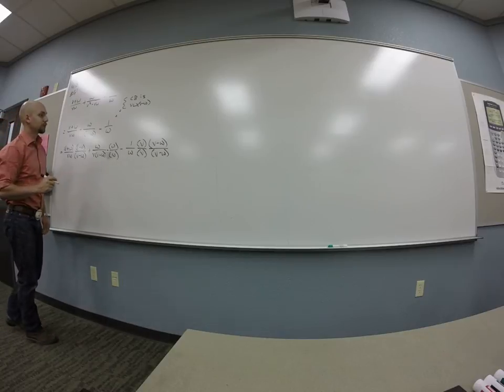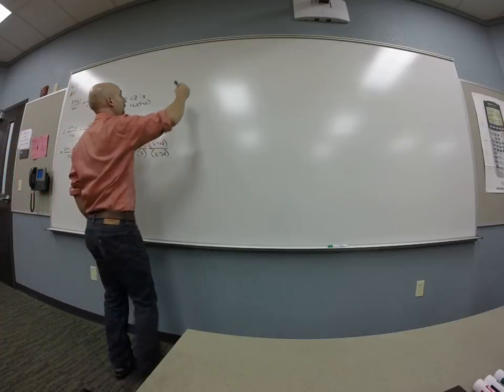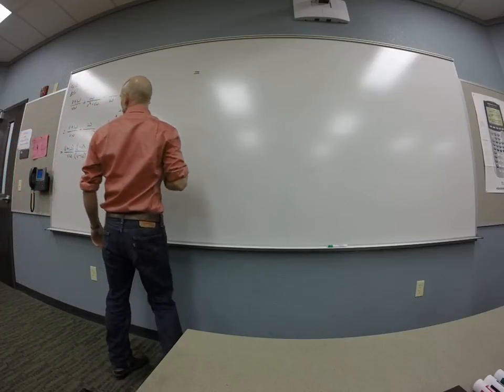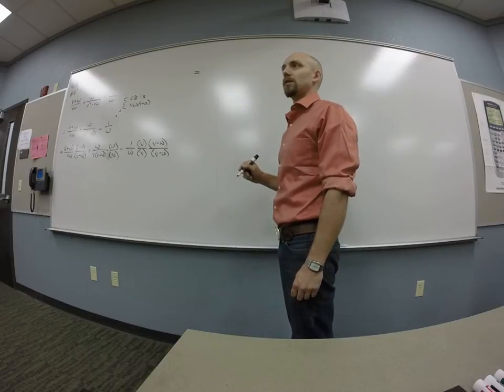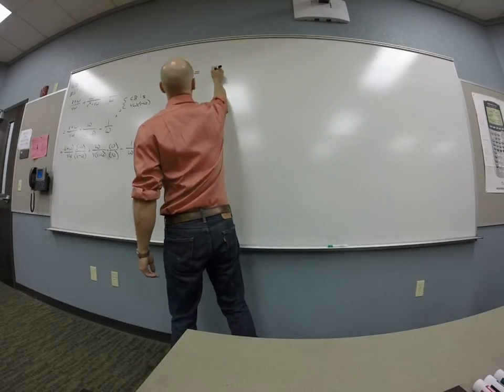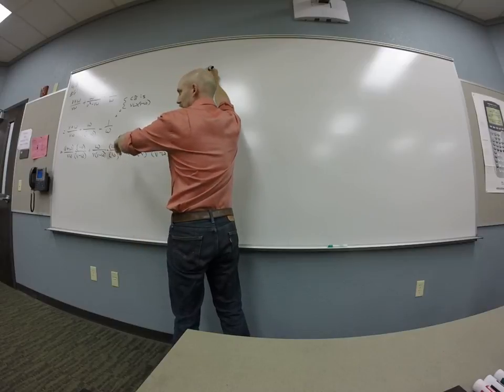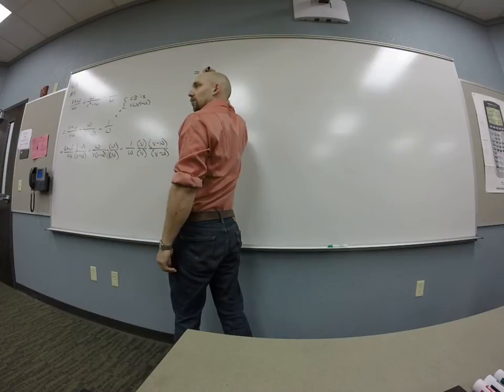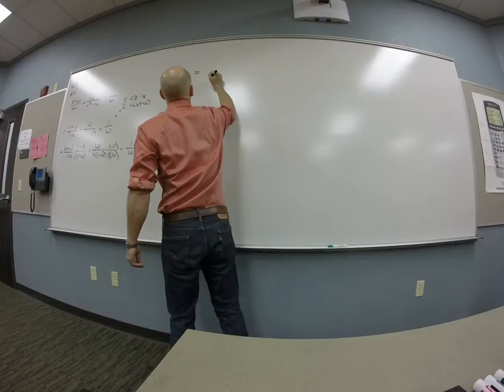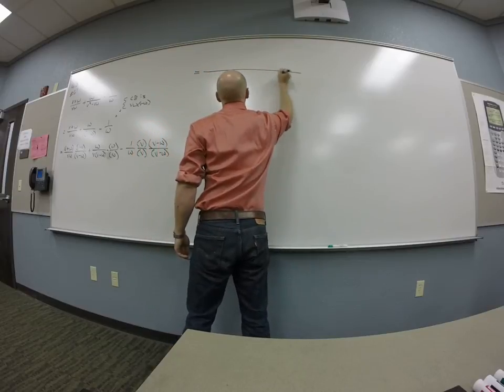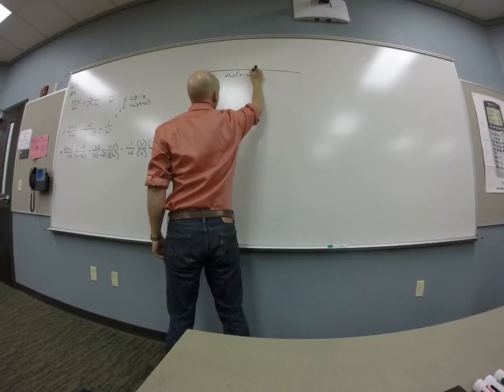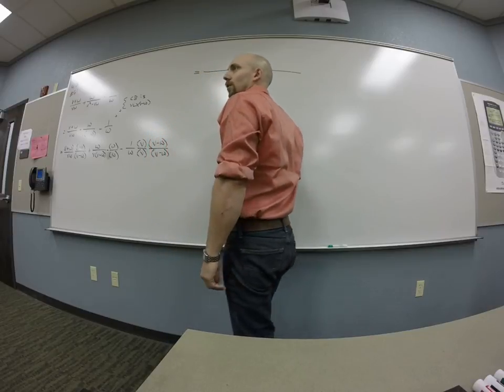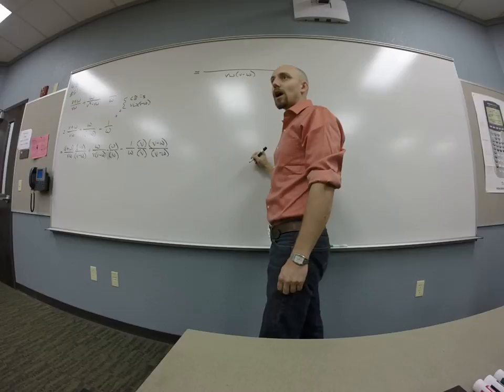Okay, so then I say, all right. Okay, now we should be able to simplify a little bit. Everything is over this VW times V minus W, right? Okay, so all told here, I've got VW over V minus W. Then I just need to write down the tops, right?